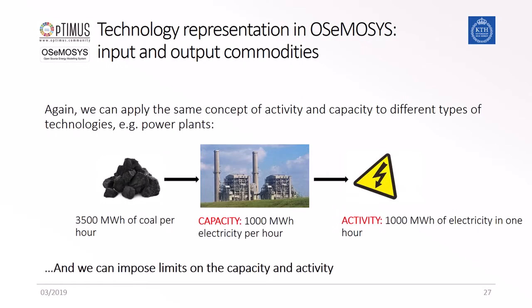The same can be applied to the coal power plant, where the maximum input activity of the fuel coal to the power plant is 3500 megawatt hours. The capacity is producing 1000 megawatt hours per hour, which leads to the output of 1000 megawatt hours of electricity.